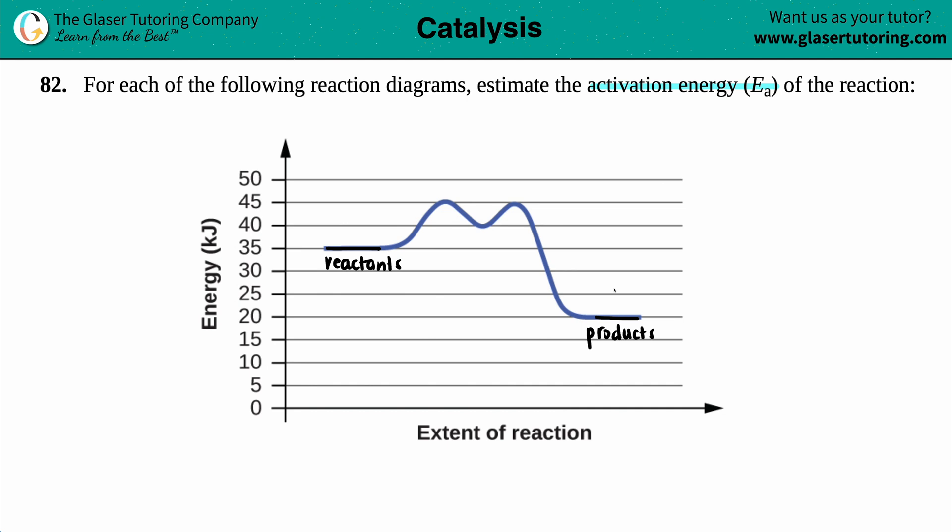Now there's a simple formula for this. Usually activation energy isn't really given a formula because it's so simple, but just to have it on screen, the formula is this. So activation energy always equals your peak energy minus the starting material or where you're starting from. Generally, it's going to be from your reactants.